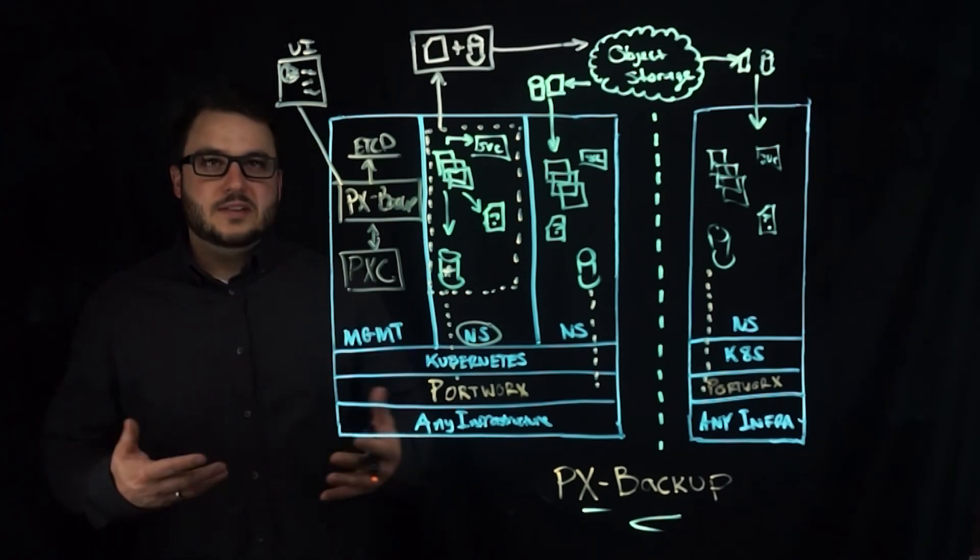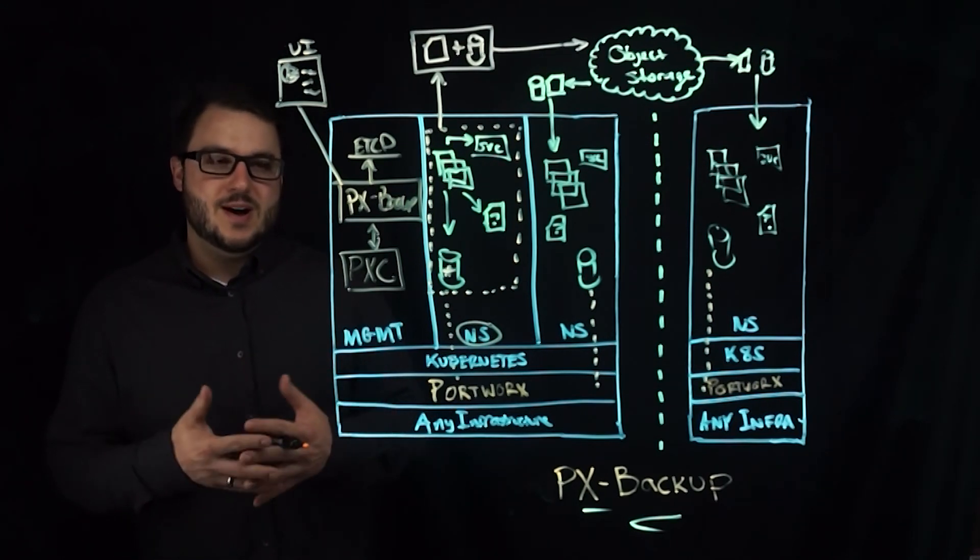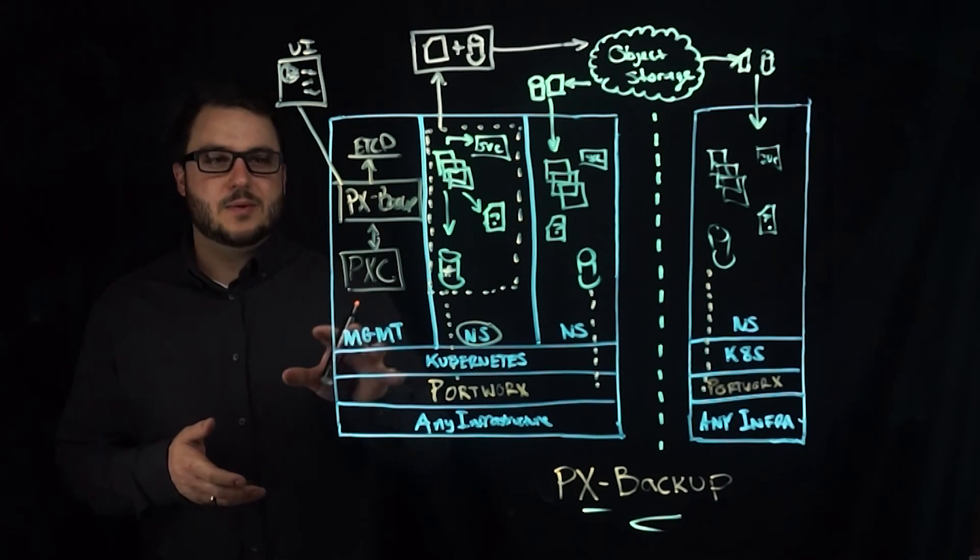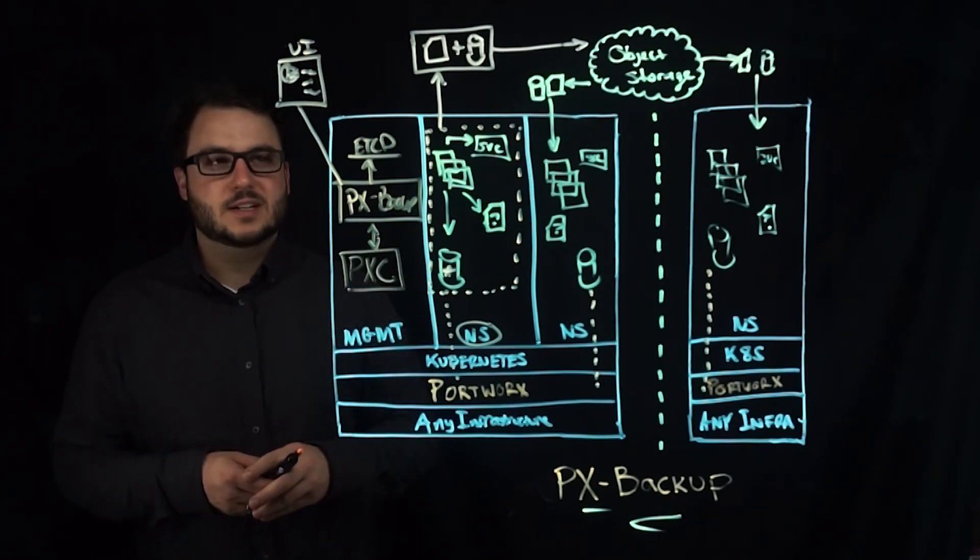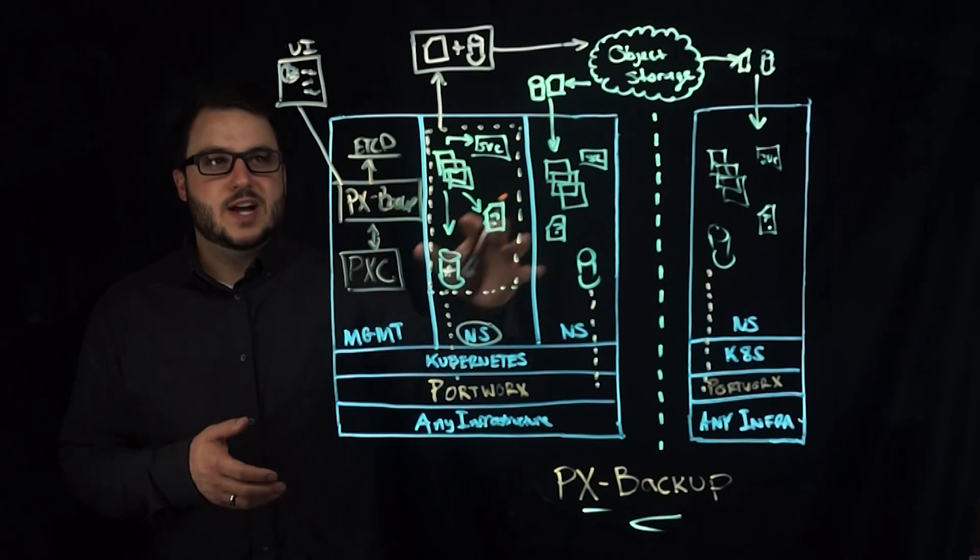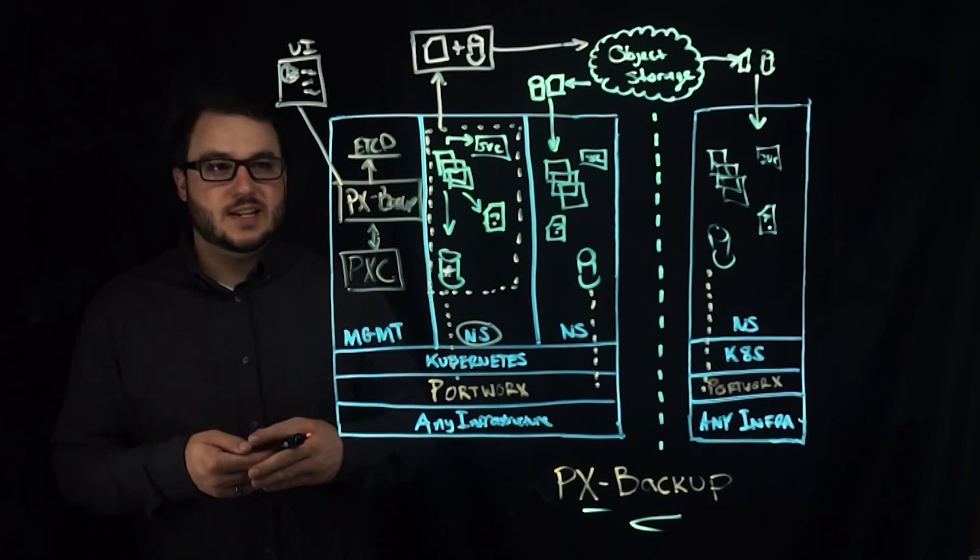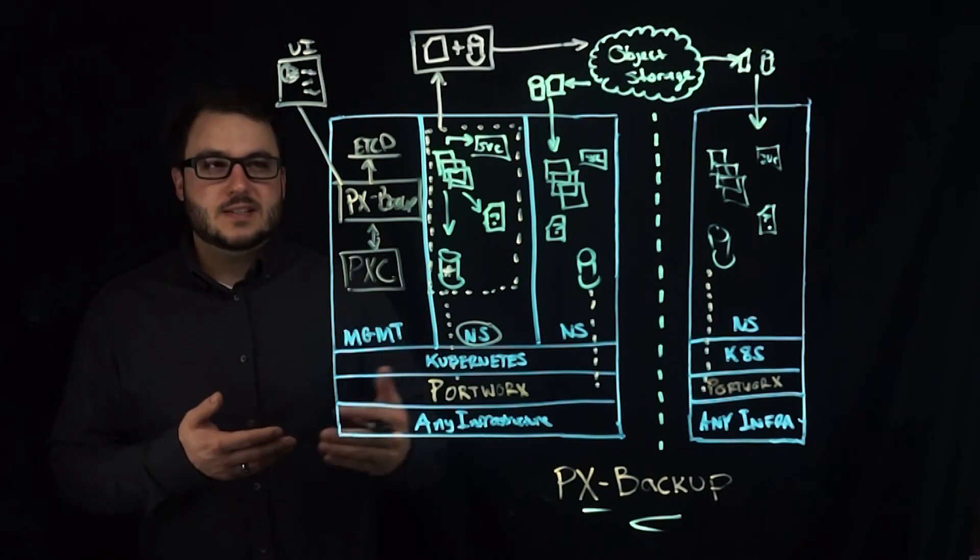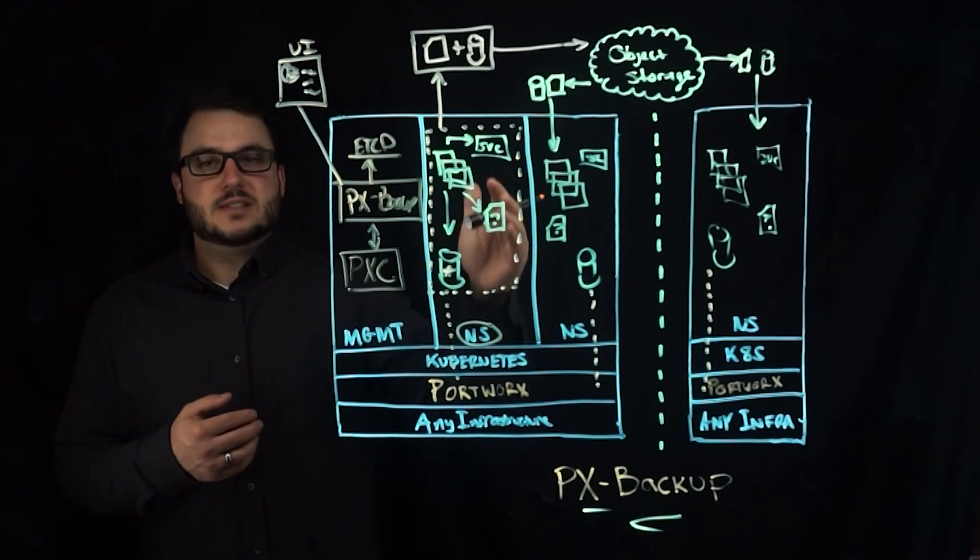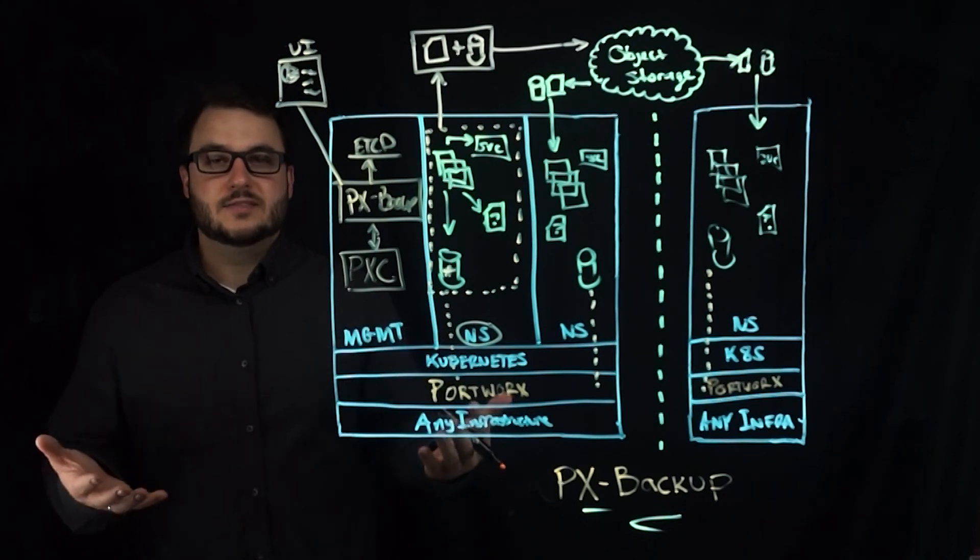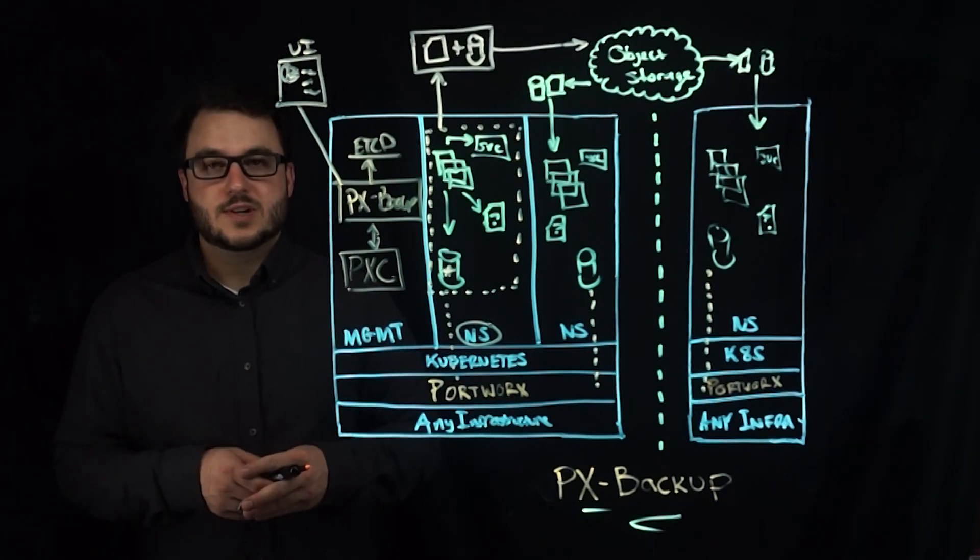So overall, this is the overview of PX Backup, how it gets installed with the central management plane and management cluster, and how it reaches out to multiple clusters and can back up at the namespace level, application level, object level, and restore to namespaces and other clusters on various types of infrastructure.